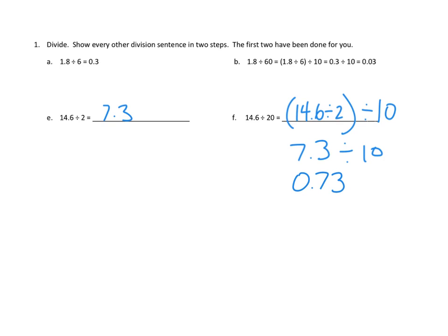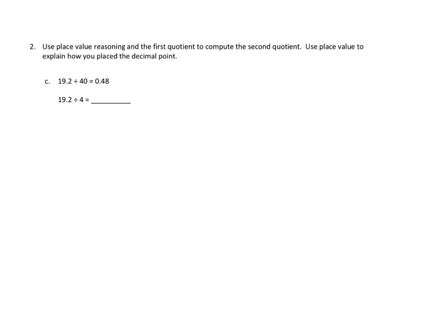Awesome. We're going to see patterns like that going the other direction in number two. So use place value reasoning and the first quotient to compute the second quotient. Use place value to explain how you place the decimal point. Let's take a look at C. C starts with this problem, 19 and 2 tenths divided by 40, and they give us the answer.